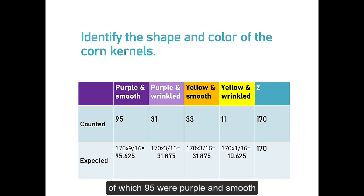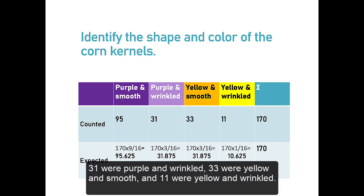Of which 95 were purple and smooth, 31 were purple and wrinkled, 33 were yellow and smooth, and 11 were yellow and wrinkled.